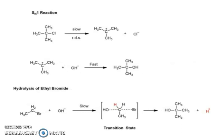In SN1 reactions, the rate-determining step is the first step, making it a two-step reaction mechanism, whereas SN2 is a single-step reaction mechanism. The reaction occurs in two steps, but the rate-determining step is the first step, so it is SN1. In the hydrolysis of ethyl bromide, you can see the formation of a transition state — this is an example of SN2.